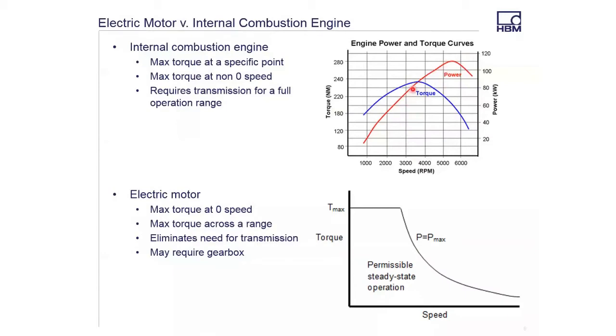This is why we require a transmission with an internal combustion engine - to get max torque at a variety of speeds so the vehicle can operate across the full zero to 60 or zero to 100 range. The fact that there's no torque at zero speed is also why vehicles need a clutch. You have to spin the engine up to a certain speed to get torque capability to start the vehicle. These are complexities necessary for an internal combustion engine.